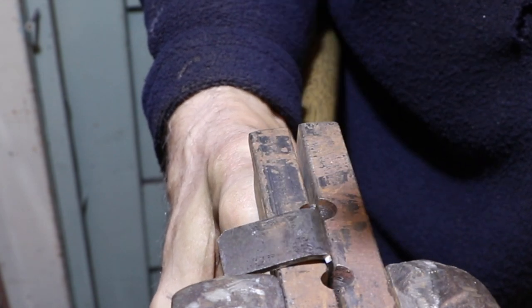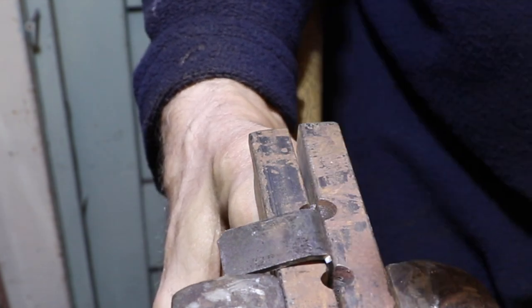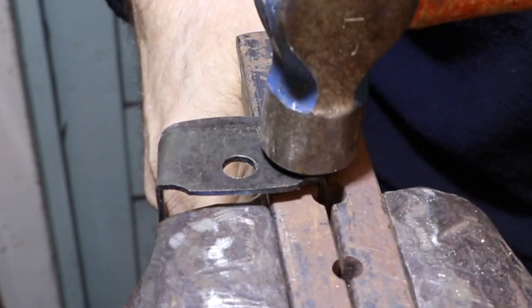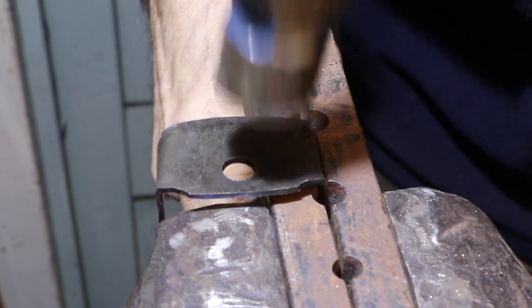The first step is to straighten the bar stock leading up to the corner. You want to end up with two straight sections with just a slight radius right on the corner.